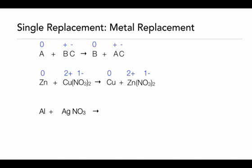In our last reaction for metal replacement, we're going to look at the single replacement reaction between aluminum and silver nitrate. Aluminum is going to replace the silver in silver nitrate. Aluminum starts off with a zero oxidation state, silver starts off with a 1 plus, and nitrate is 1 negative. Silver will be by itself, and the aluminum is going to go with the nitrate. Because aluminum forms a 3 plus oxidation state, to balance the charge with the nitrate we must have 3 nitrates in the formula. We then balance the reaction by putting a coefficient of 3 in front of the silver nitrate and a coefficient of 3 in front of the silver.